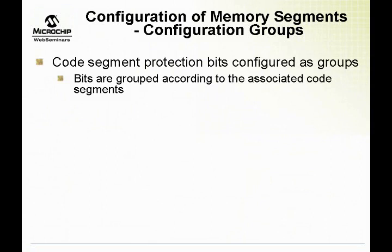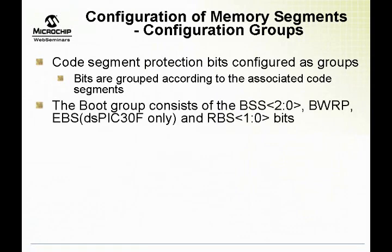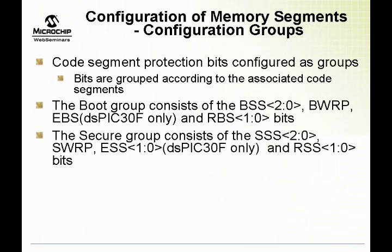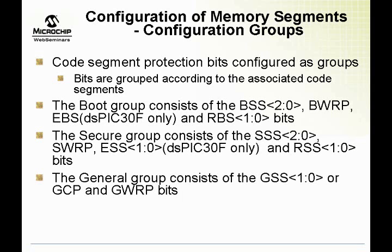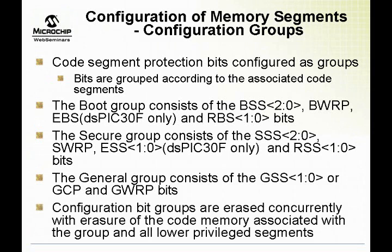Boot, secure, and general segments are configured by programming configuration registers associated with each memory segment. The configuration register for boot segment, FBS, configures not only the flash memory segment, but also the RAM and the EEPROM segments. Thus, all three memories — flash, EEPROM, and RAM — need to be configured as a group. Similar rules apply for the secure segment and the general segment. Attempting to erase a configuration register will erase not only the configuration register, but also the protected memory segment and all segments with lower privileges. For instance, erasing the secure segment configuration register, FSS, will erase the secure segment as well as the general segment memory in flash.